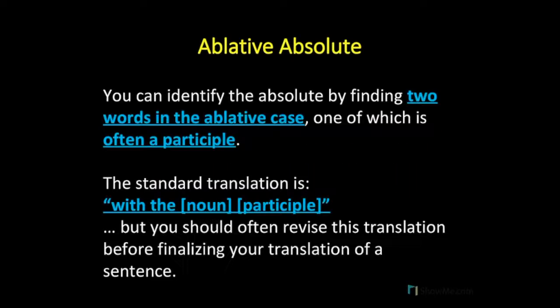First, a brief explanation about the ablative absolute one more time. You can identify the ablative absolute by finding two words that are in the ablative case, one of which is often a participle. The standard translation of the ablative absolute is 'with the noun participle,' but this translation almost always needs to be revised, because English has better ways of expressing the sense of an ablative absolute from Latin.